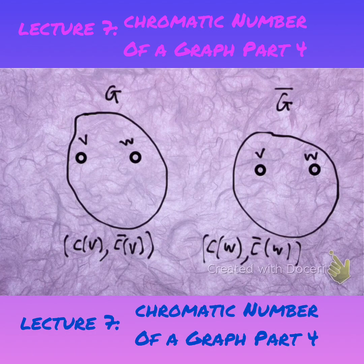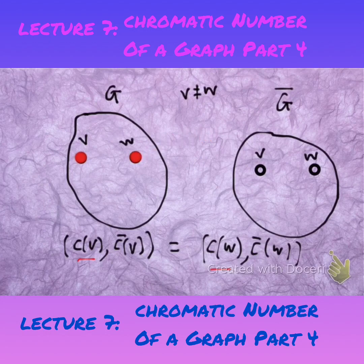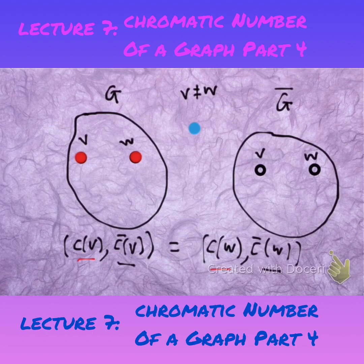For two vertices V and W in the vertex set, we have that these two ordered pairs are not equal if V is not equal to W. Let's clarify that: if we look at G and G-bar and the two vertices V and W are different, and we suppose those two ordered pairs are the same, that means the color assigned to V must be the same as the color assigned to W within G. Also, the color assigned to V in the complement is the same as the color assigned to W in the complement.